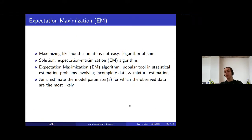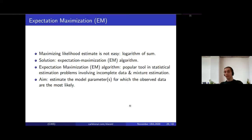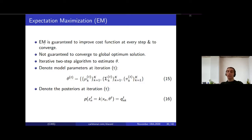To estimate the parameters of Gaussian mixture models we use the expectation maximization algorithm, a very popular tool in statistical estimation problems involving mixture models or incomplete/latent variable data. The goal is to find theta for which the observed data is most likely to be sampled. The EM algorithm guarantees improving the cost function at every step and converging to a local optimum, but does not guarantee convergence to a global optimum. It is an iterative two-step algorithm.